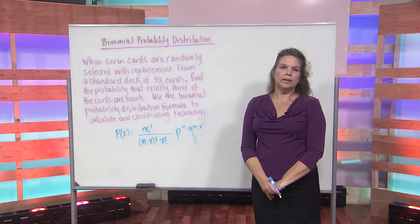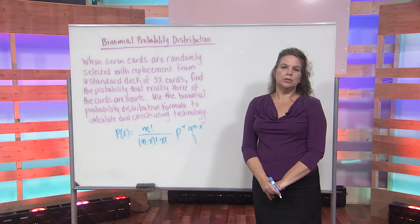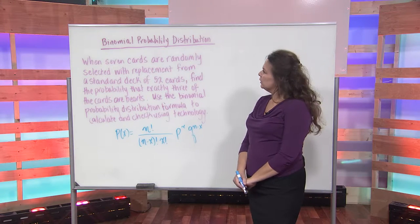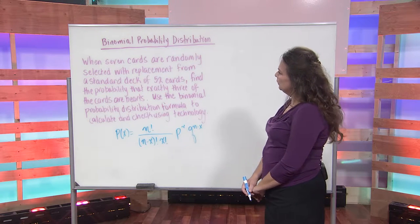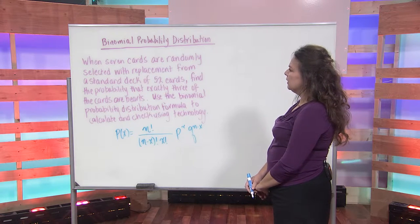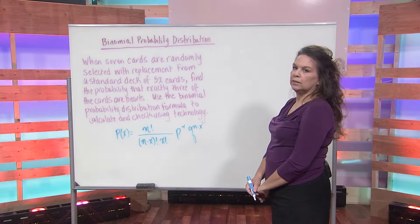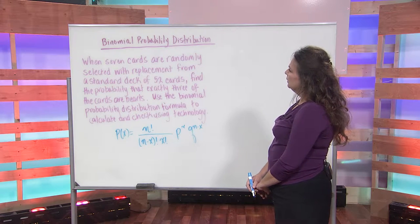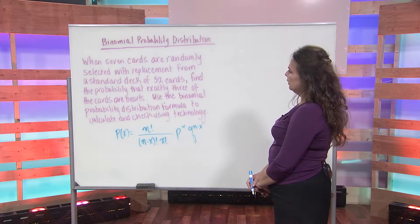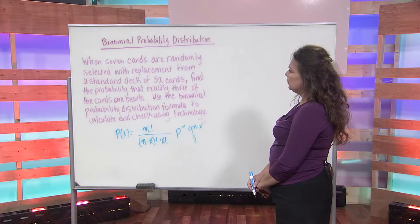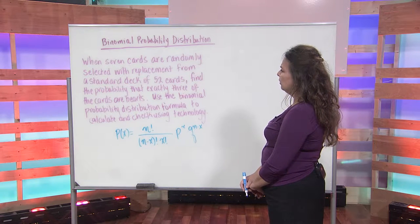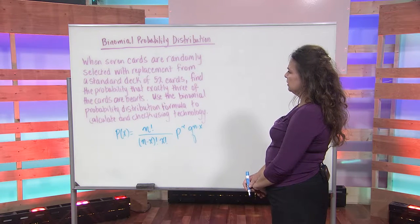For this example, we're looking at a binomial probability distribution. For this problem, we have when seven cards are randomly selected with replacement from a standard deck of 52 cards, we want to find the probability that exactly three of the cards are hearts.